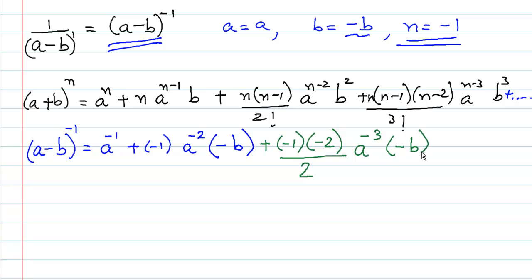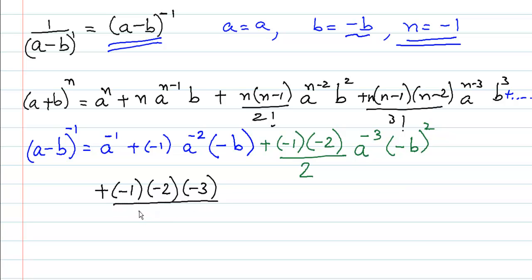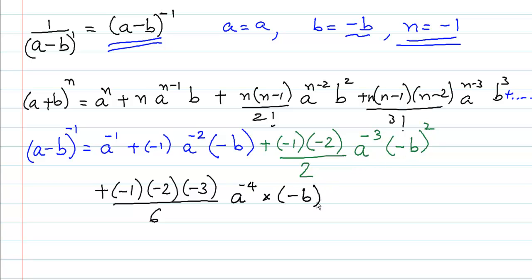The fourth term is [n(n-1)(n-2)/3!]·a^(n-3)·b³. With n = -1: (-1)(-2)(-3)/3! · a^(-4) · (-b)³. Since 3! = 6 and -1 - 3 = -4, we have a^(-4)·(-b)³, and so on — we can continue as many terms as we wish.